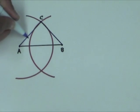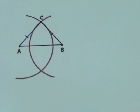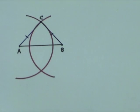We know that AC and BC are equal in length because they are radii of circles that were drawn using the same compass width. Hence, ABC is an isosceles triangle.